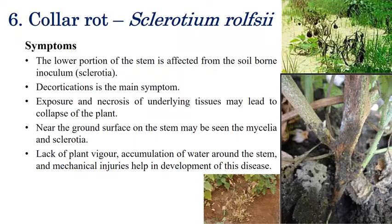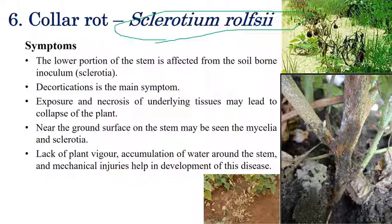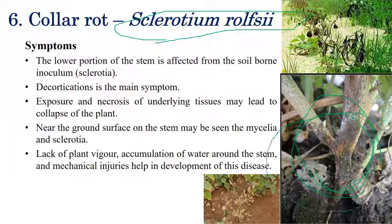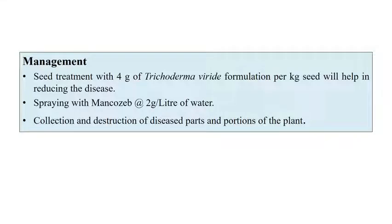The next disease is collar rot, caused by Sclerotium rolfsii. The common symptoms are white color mycelial growth on the collar region. In severe stages, brown or mustard-shaped sclerotia — sometimes white or orange in color — can be seen on the collar region. This is the most prominent symptom indicating Sclerotium infection. In later stages the plant slowly starts to die, showing stunting, desiccation, or wilting-like symptoms.